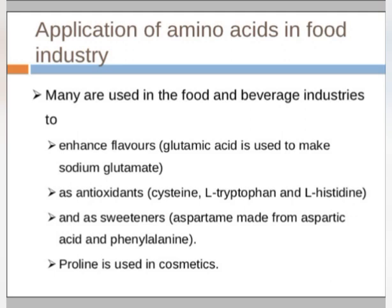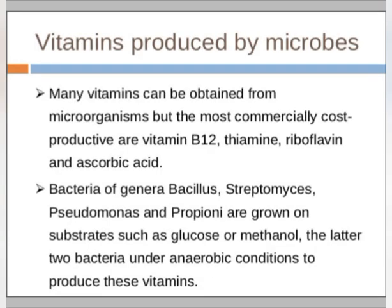Vitamins produced by microbes. Many vitamins can be obtained from microorganisms, but the most commercially cost-productive are vitamins B12, thiamine, riboflavin, and ascorbic acid. Bacteria of the genera Bacillus, Streptomyces, Pseudomonas, and Propionibacterium are grown on substrates such as glucose or methanol — the latter two bacteria under anaerobic conditions — to produce these vitamins.